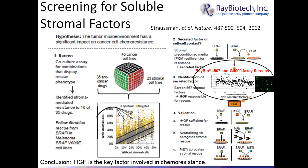They confirmed that HGF is secreted into the co-culture system and confers resistance to BRAF inhibition. Normally a BRAF inhibitor kills cells, but adding recombinant HGF results in cell survival, demonstrated in tissue culture. They also showed that a neutralizing antibody to the anti-cancer drug prevents BRAF inhibition. A neutralizing antibody to recombinant HGF also results in cell survival, and inhibition of the HGF receptor MET likewise allows cells to survive.